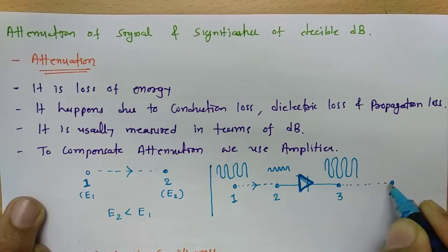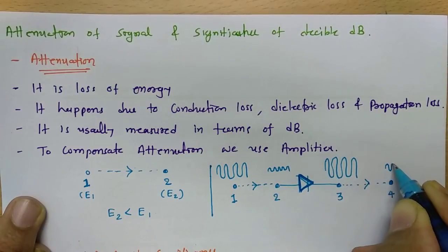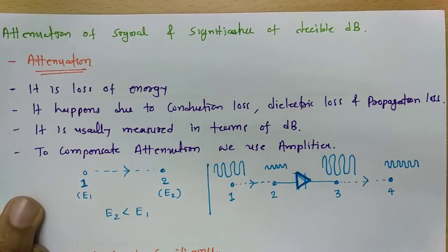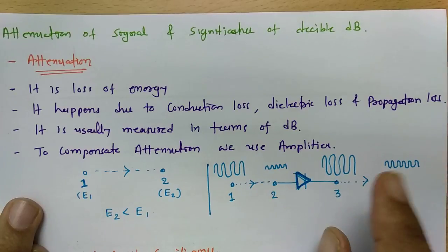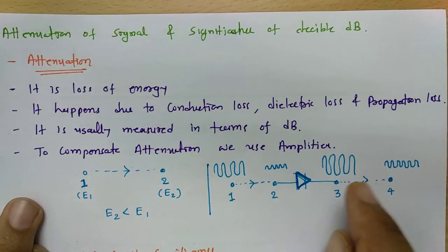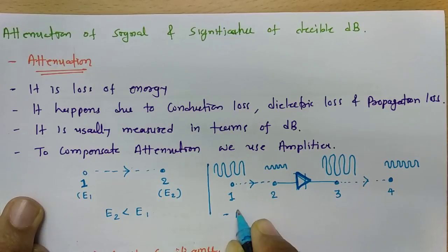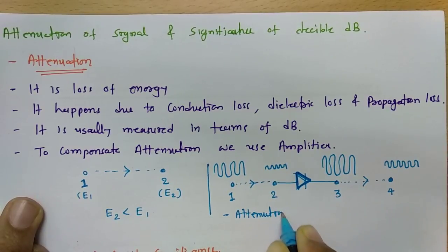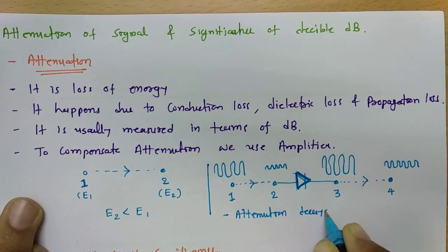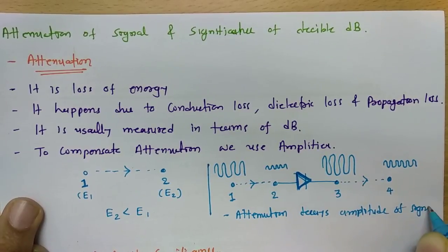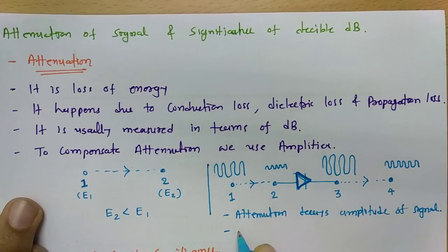Again, when the signal propagates through the medium from point 3 to point 4, its strength will decrease again. Ultimately, attenuation of signal is a loss of energy where you do not lose information. Attenuation will not destroy information — it will only decay the amplitude of the signal. You will not lose information because of attenuation.